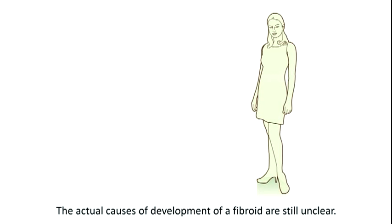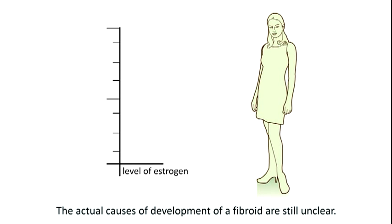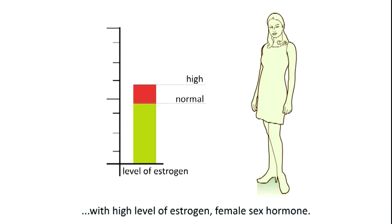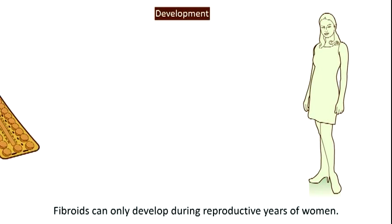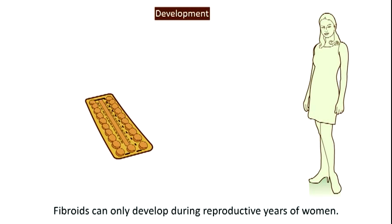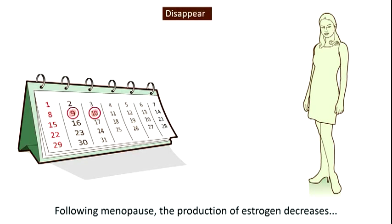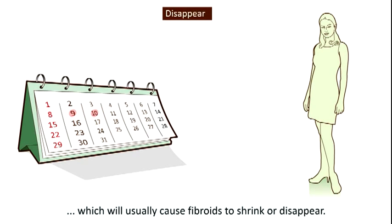The actual causes of development of a fibroid are still unclear. However, it has been documented that fibroids are associated with high levels of oestrogen, the female sex hormone. Fibroids can only develop during the reproductive years of women. Following menopause, the production of oestrogen decreases, which will usually cause fibroids to shrink or disappear.